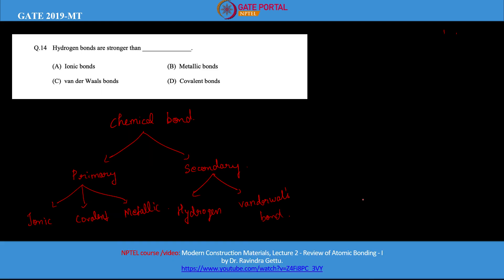Coming to the answer: primary bonds involve sharing or transfer of electrons, while the secondary bonds involve electrostatic attraction or weak electric forces. Primary bonds are always stronger than secondary bonds. Between the two secondary bonds — hydrogen and van der Waals — the hydrogen bond is stronger, at around 5 to 30 kilojoules per mole. Therefore, the correct answer is van der Waals bond, since all the other options are primary bonds which are stronger than the hydrogen bond.